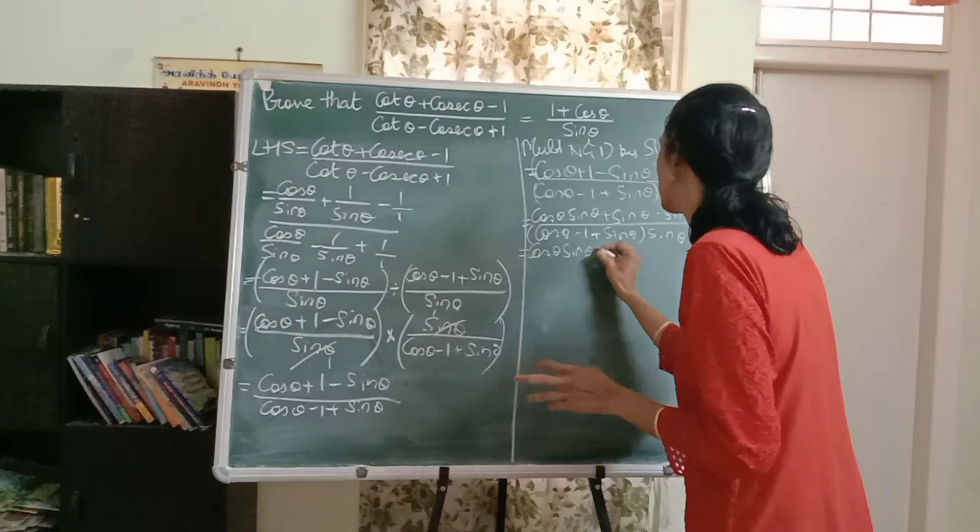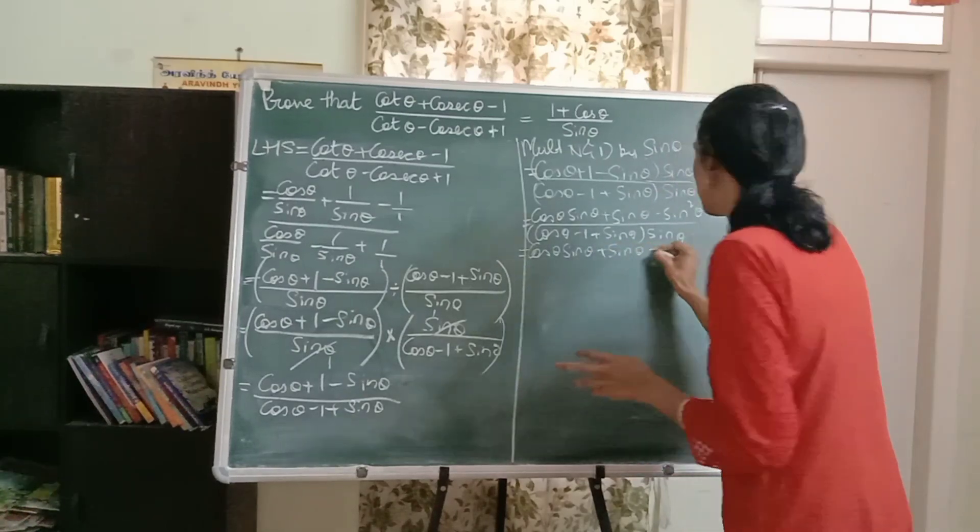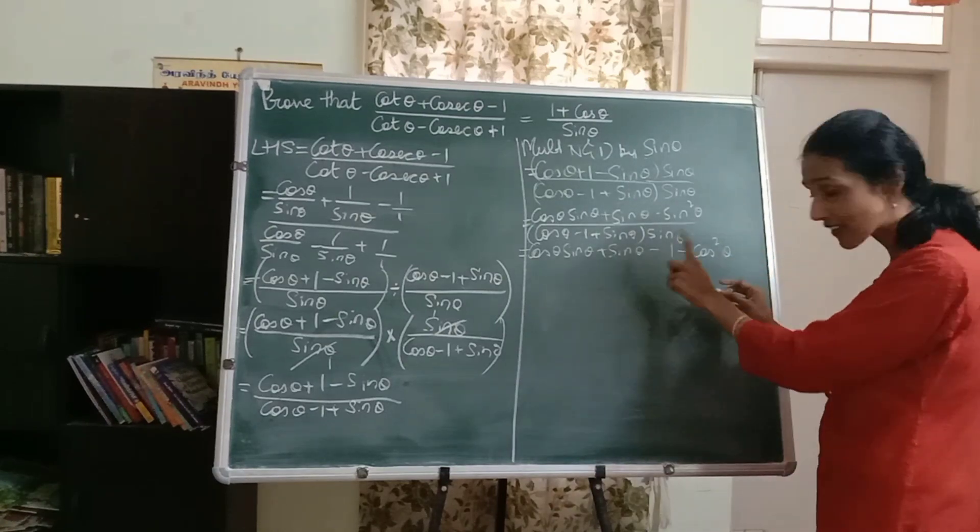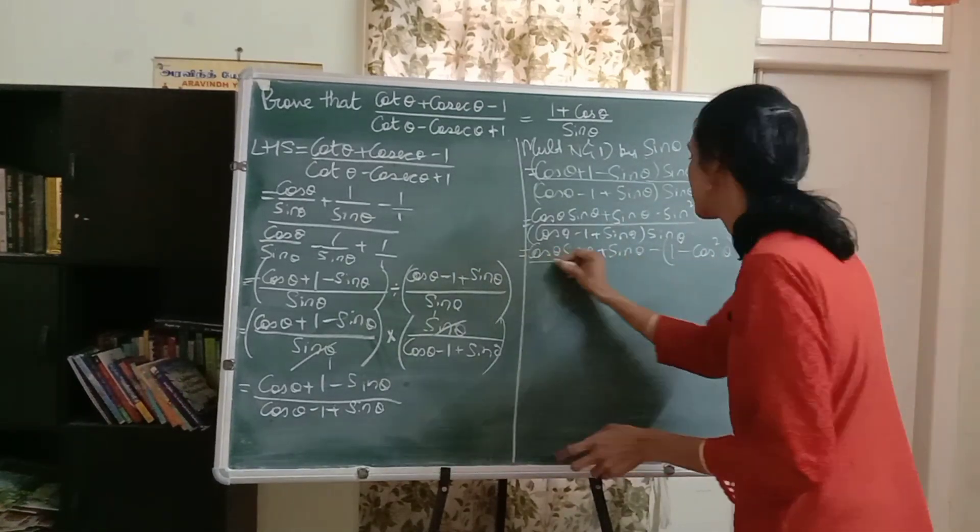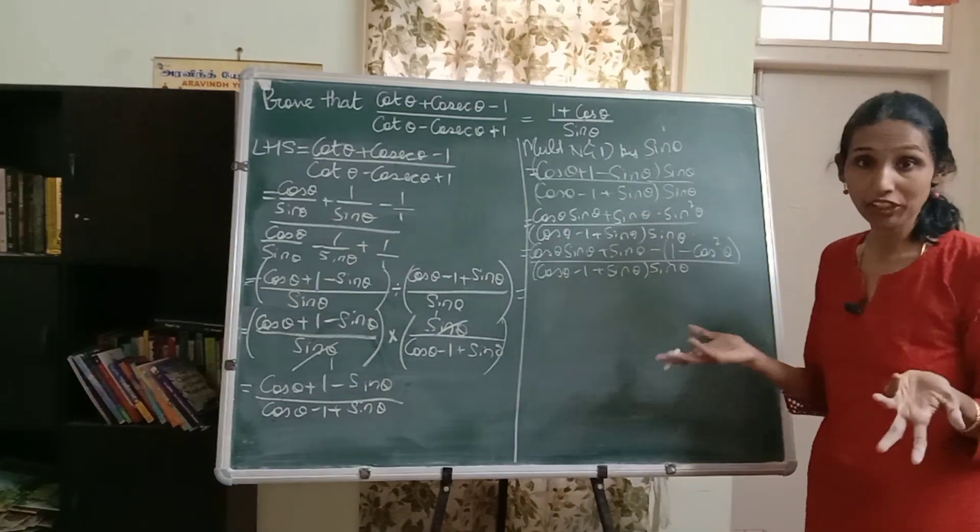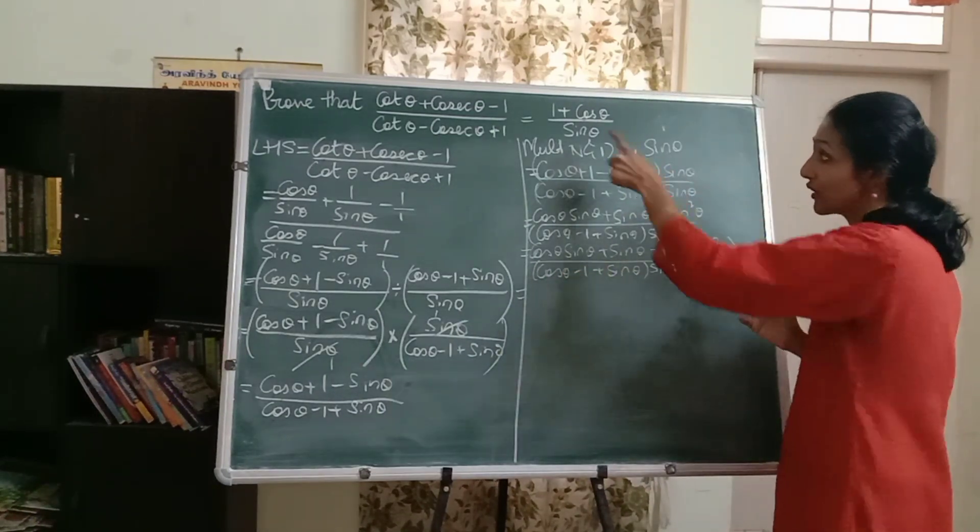So I'll get cos theta sine theta plus sine theta minus one minus cos square theta. But because there is a minus outside, put the bracket, friends. Don't forget here, the denominator is the same. I'll just write that. Now what do we do?